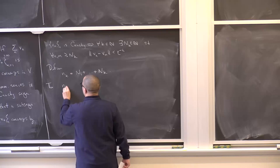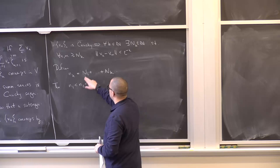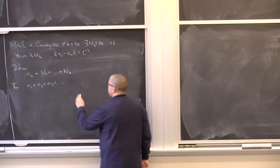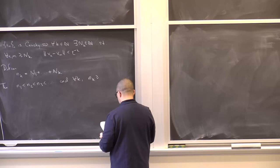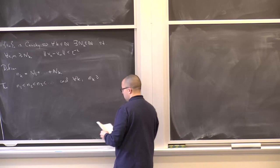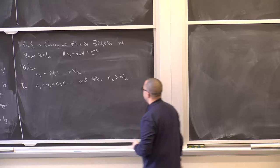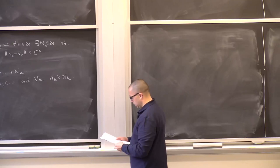Then n_1 < n_2 < n_3, because at each stage I'm adding a natural number. So this is an increasing sequence of integers. And for all k, n_k is less than or equal to N_k — that is, little n_k equals some integers plus capital N_k. So the V_{n_k}'s are going to be the elements which converge. Thus, for all k, the norm of V_{n_{k+1}} − V_{n_k} is less than 2^{−k}, by the condition on how the N_k's were chosen.